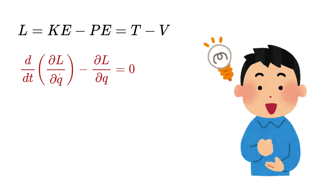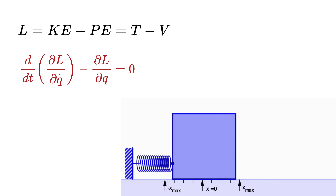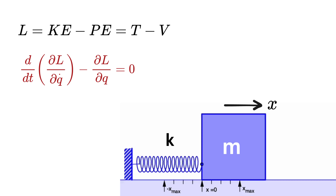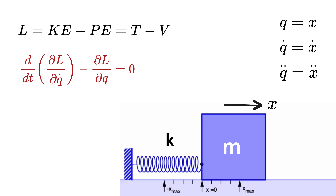Now let's look at two more examples. Suppose we have a mass m attached to a spring with stiffness k, and x measures how far the mass is from the equilibrium position. For this spring-mass system moving along a straight line, q equals x, q-dot is x-dot or the velocity of the mass, and q-double-dot is the acceleration x-double-dot.